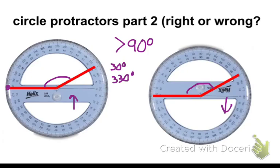Do either of those seem like a correct answer? Remember, go back to your benchmark. Don't trust the number necessarily. Well, 30 can't possibly be right because I know that 30 is way less than 90, and I know that 330 is way bigger than even 180. That's a gigantic angle. So this one is completely being read wrong.